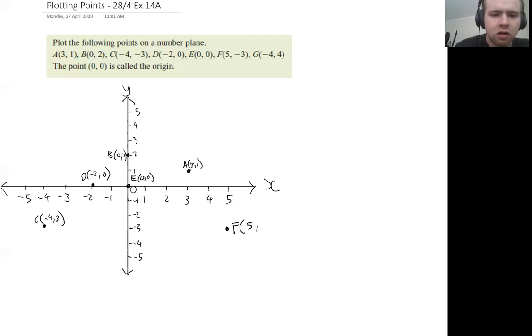F is going to be five on the x-axis and then minus three, three down here. And our last one is minus four, positive four, up here.